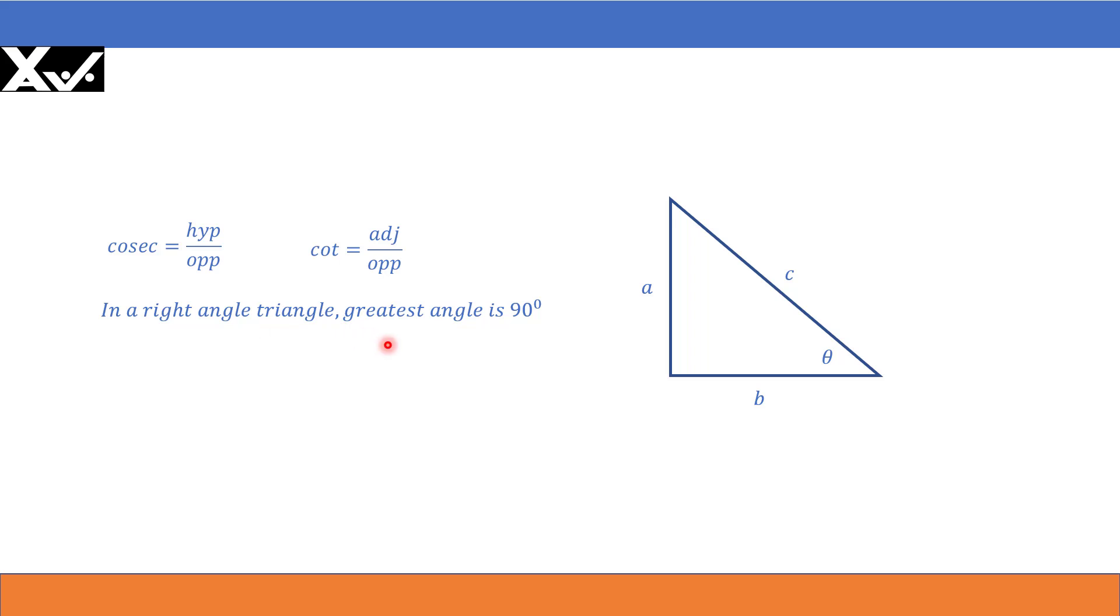In a right angle triangle, the greatest angle is 90 degrees as I told you right now. And therefore, the side opposite to 90 degrees is the greatest. C is the greatest of all the sides. In other words, the hypotenuse is the greatest side.